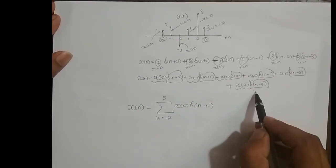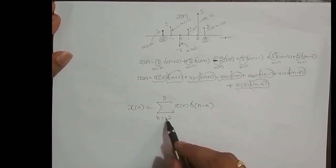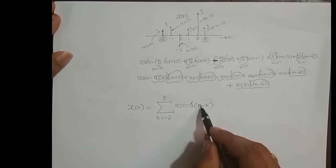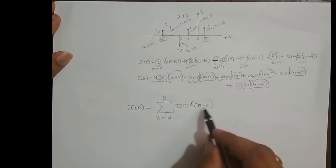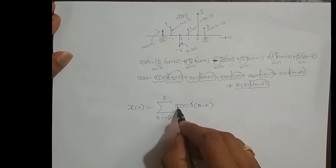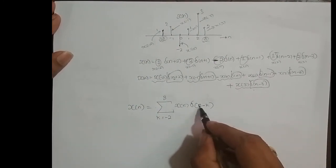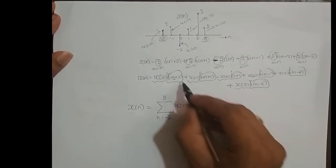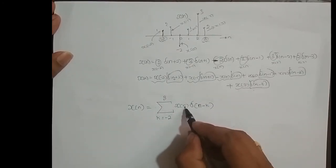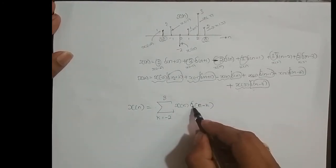Will we get back the original equation? Yes, we will. So the compact form x of n equals summation of x of k times delta of n minus k correctly expands to reproduce our original sequence.